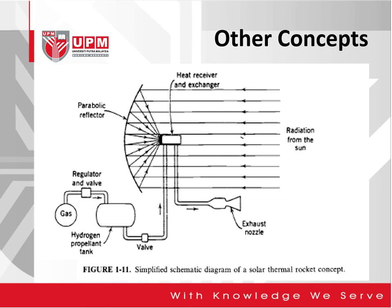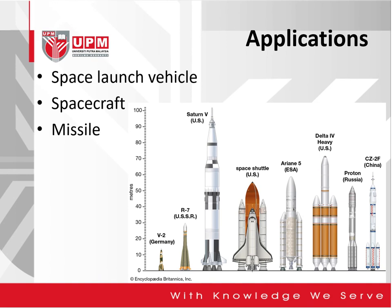The other concept is a solar thermal rocket. We have the hydrogen propellant tank, and the gas is mixed going into a valve where we have a parabolic reflector to reflect radiation from the sun. We have a heat exchanger, and here the thrust is produced through the exhaust nozzle.